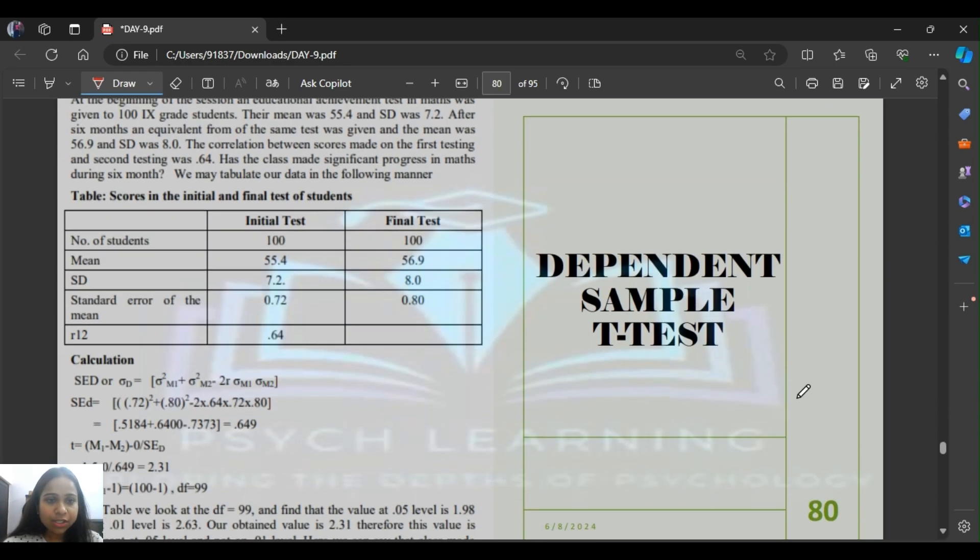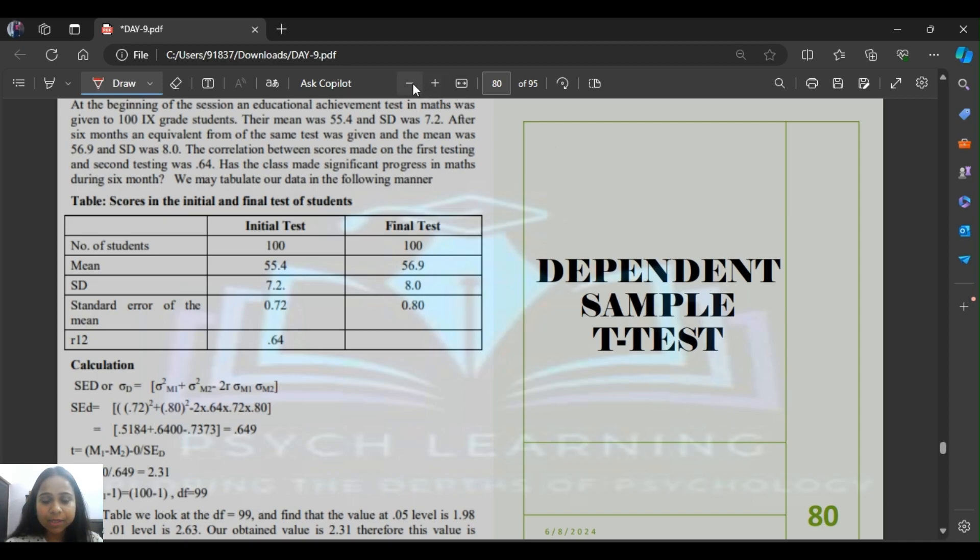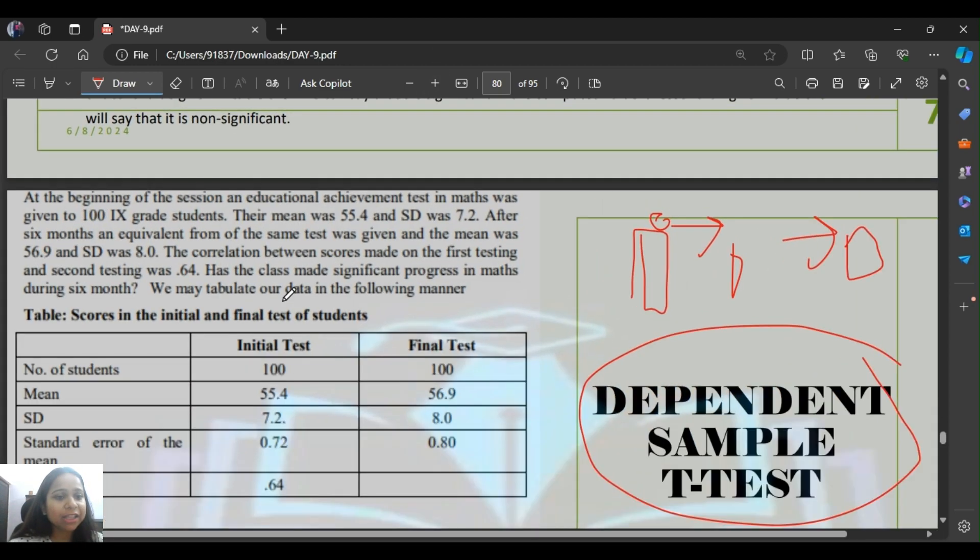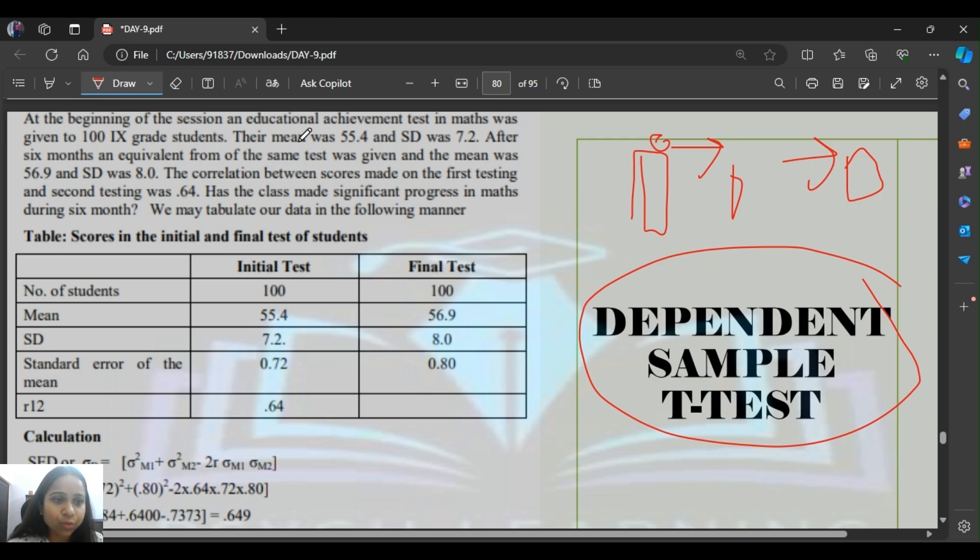Next is dependent sample test. Dependent sample is when samples are based on one another. For example, you have some girls or boys, you tested them first. After that you provided them some intervention, then tested them again. The group was the same, tested twice. That's dependent sample. Like you studied them normally, then with a demonstration method.